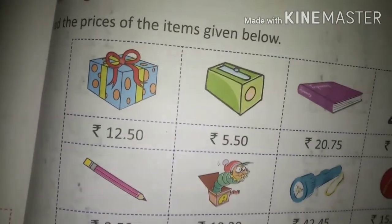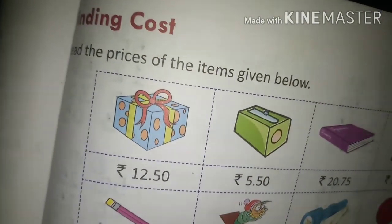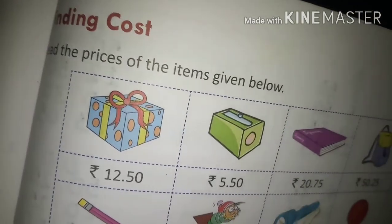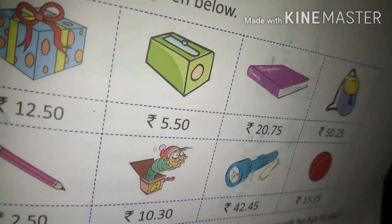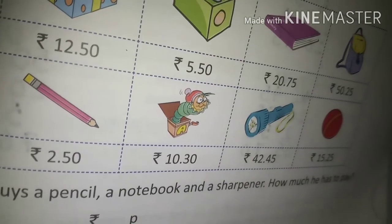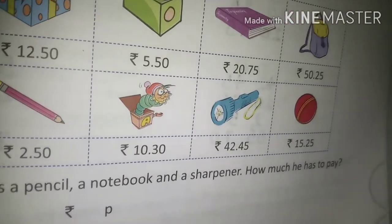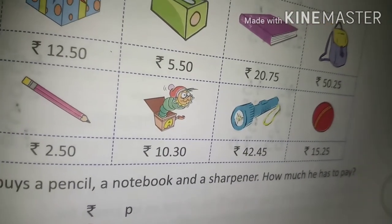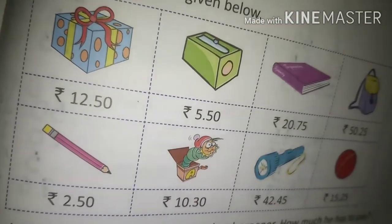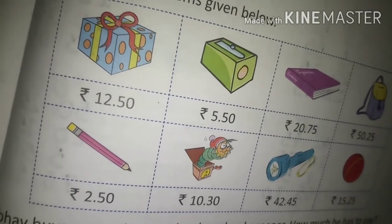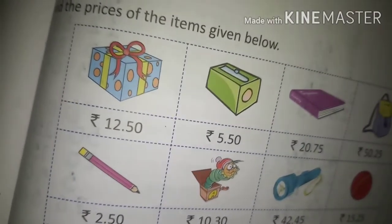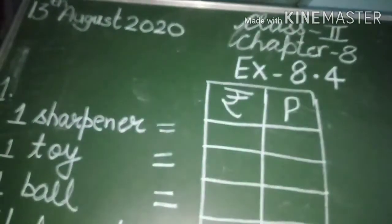Here is the table with items given below like a gift pack, a sharpener, next is a book and there is a bag, a pencil, a toy, a torch, and the last item is a bowl. The cost of these items is also given. We have to find out the cost of these items and then write them under the columns of rupees and paise.